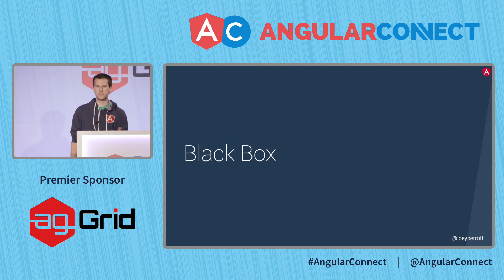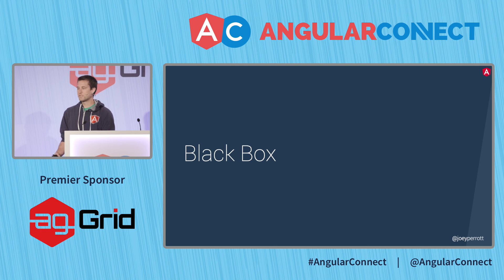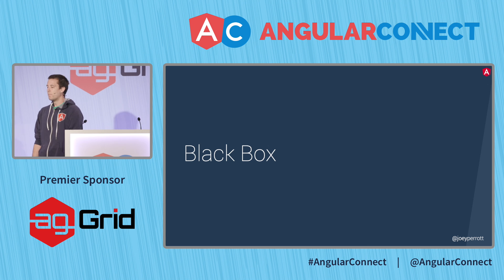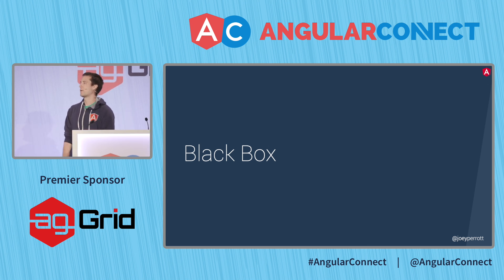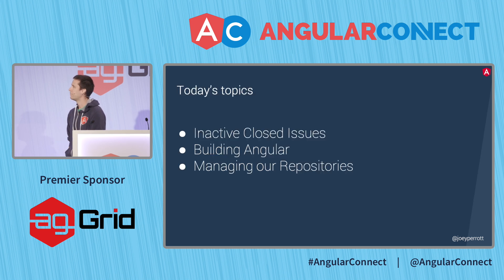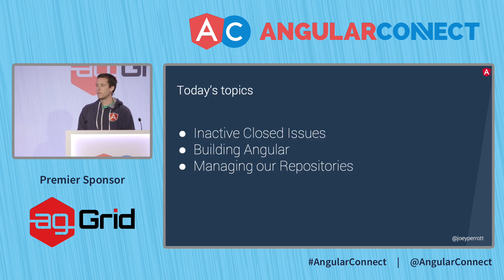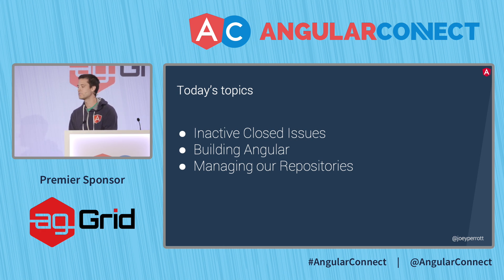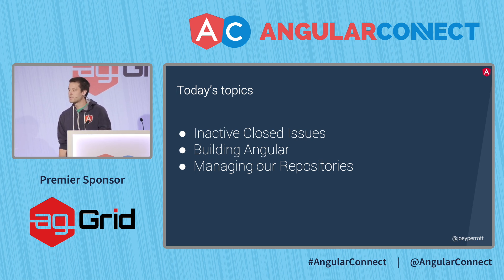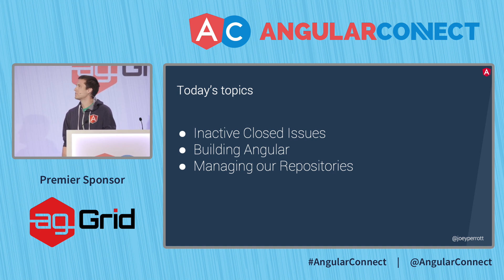DevInfra is typically a black box for people. If it's working properly, you don't think about it, you don't hear about it, and you shouldn't need to. But today we're going to look inside that black box at three things: inactive closed issues and how we're automatically locking those; building Angular itself, building the framework as fast as we can; and some of the ways that we consistently manage our repositories on GitHub.